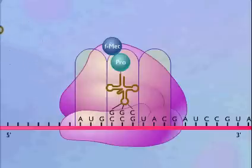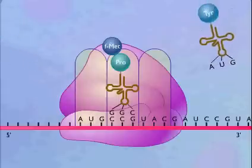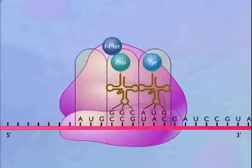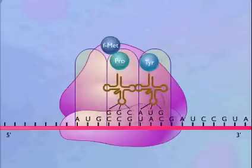A transfer RNA carrying the next amino acid now moves into the A-site where the anticodon on the transfer RNA matches the codon on the messenger RNA. The ribosome shifts down by a distance of one codon.